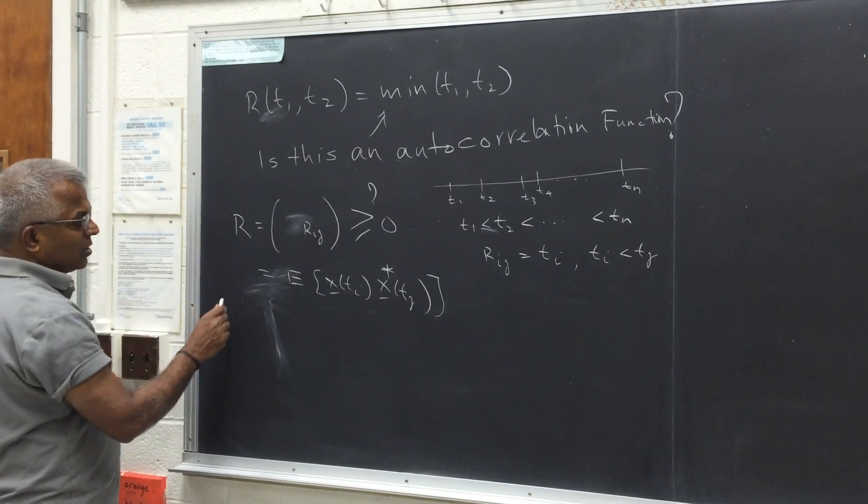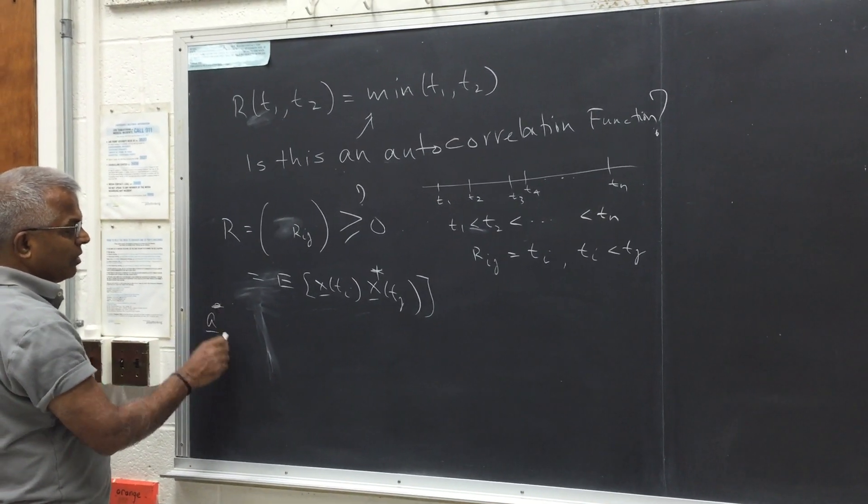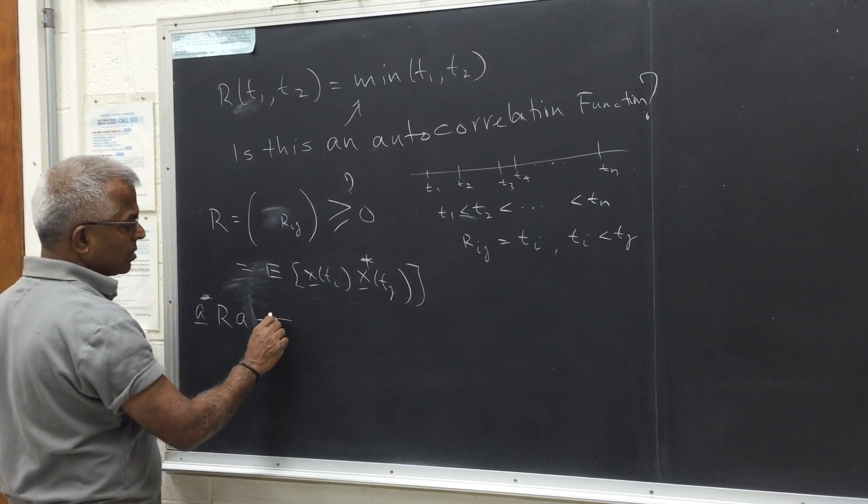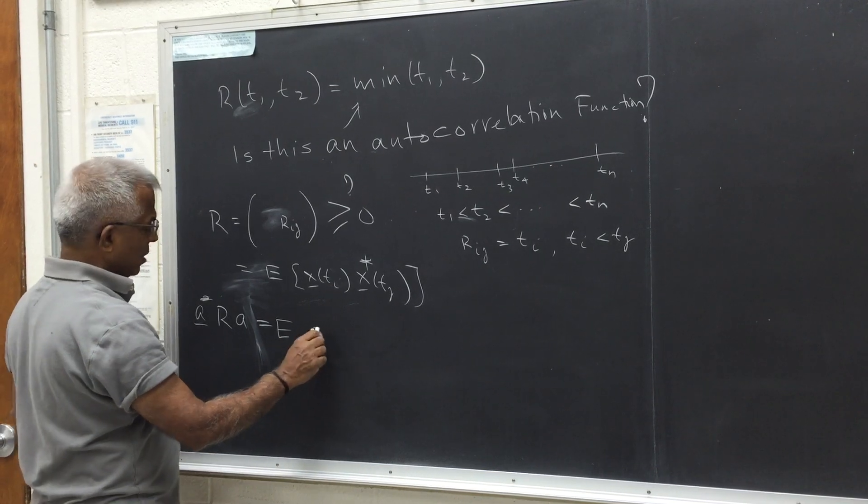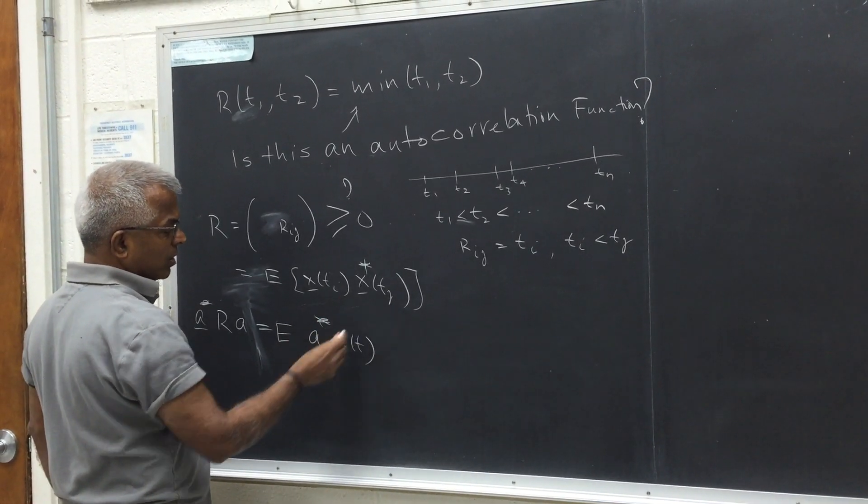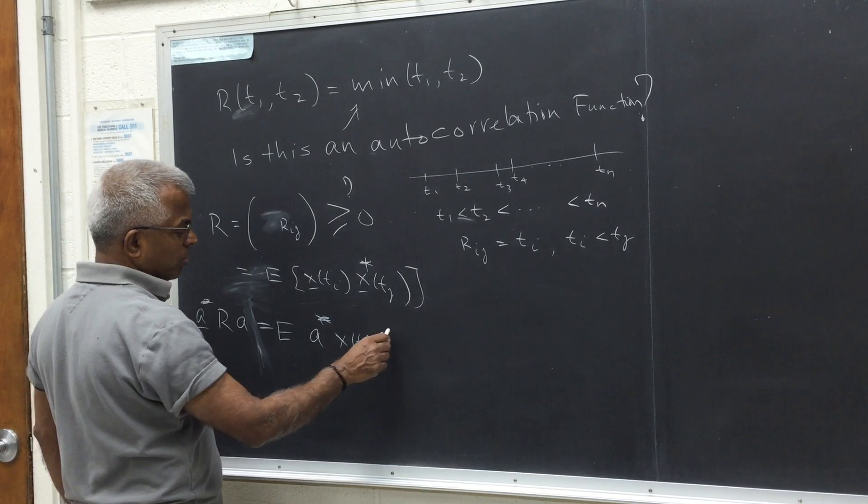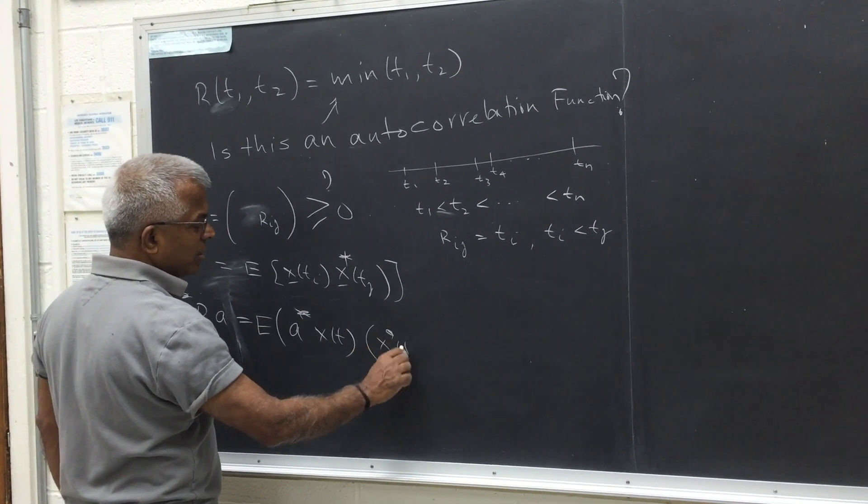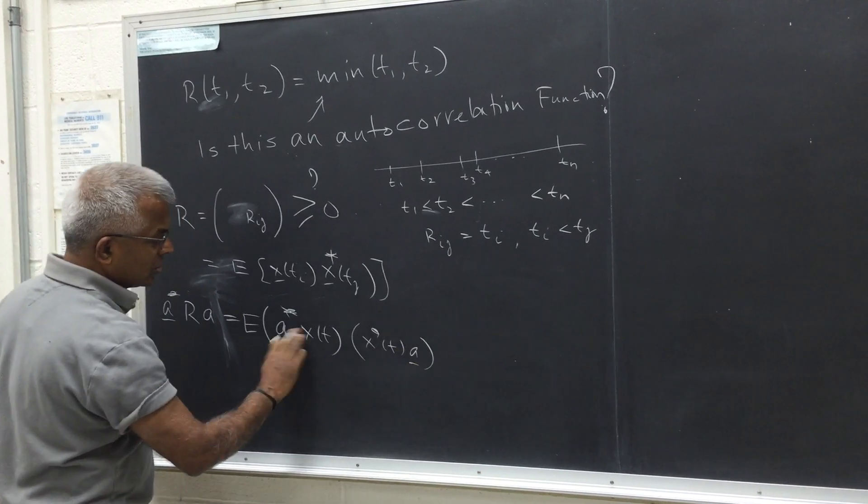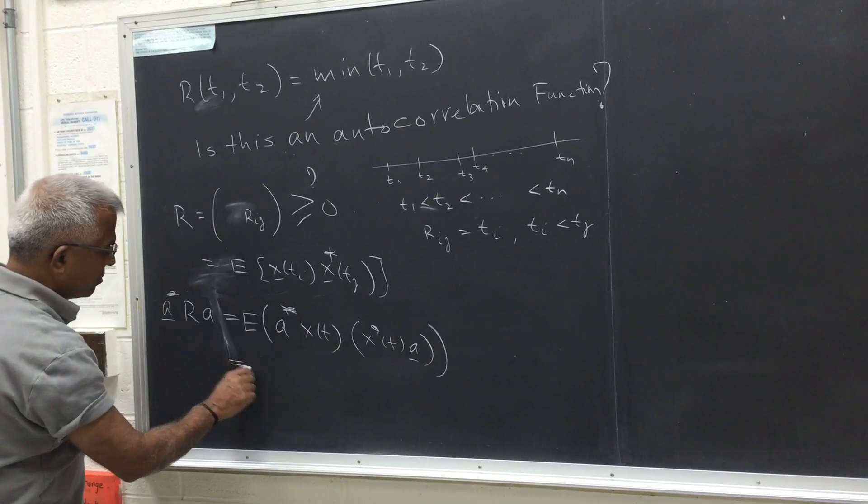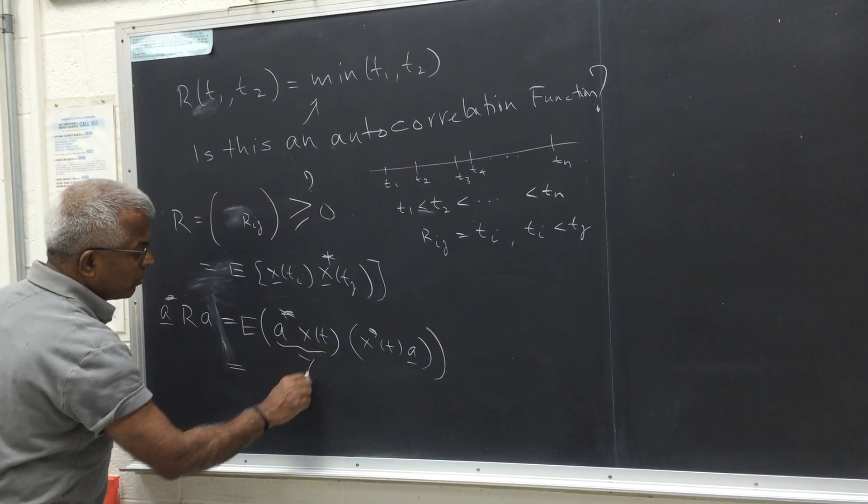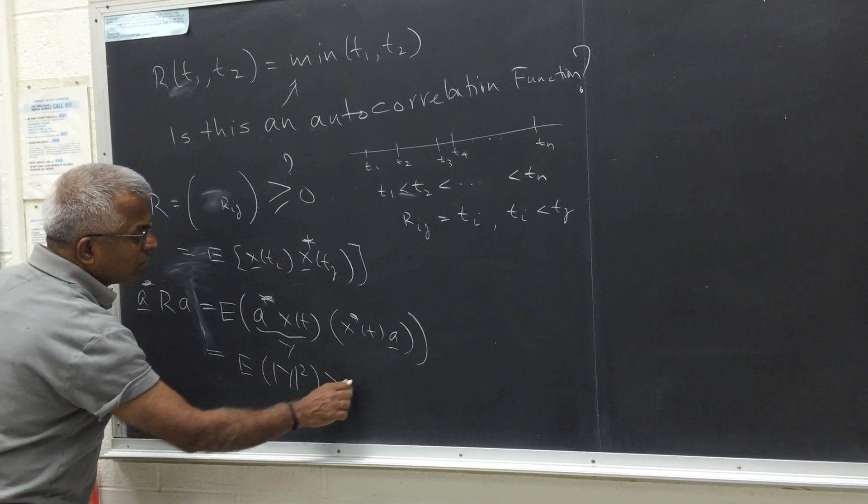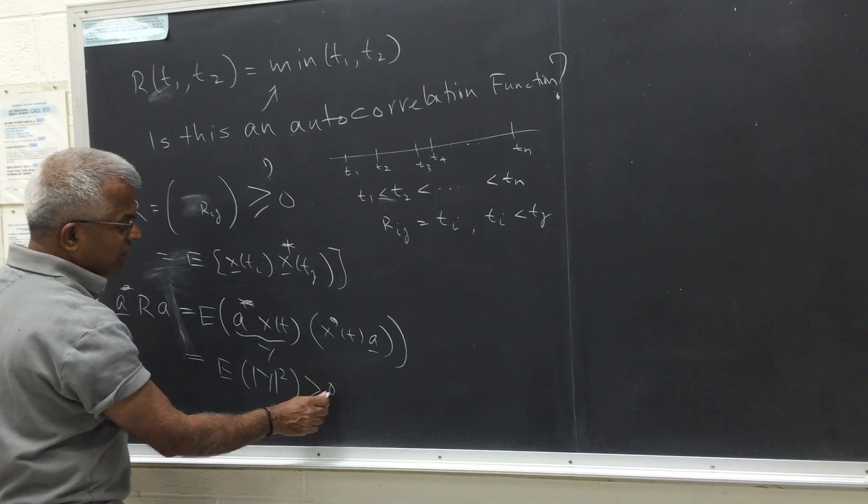So this needs to be non-negative definite. So the easiest argument is you take an arbitrary vector and look at this. So this is of course expected value of a star x of t. You can clearly see absolute value squared because multiplied by x star of t, a. So this is the complex conjugate of that. So if you call this to be y, this is expected value of y squared. And that's of course non-negative definite.